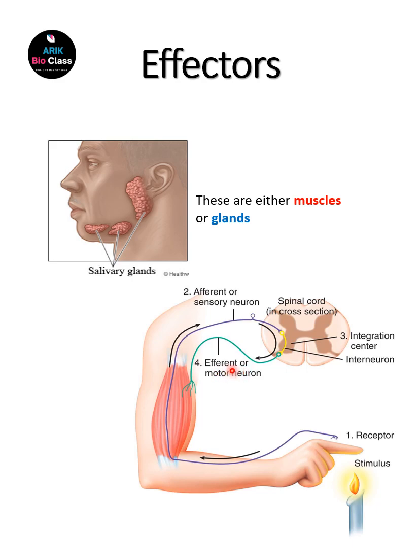So, effectors bring the information back to the effector organs. It is a very simple example of how the stimulus is taken by the receptor, information is traveled to the coordinator with the help of sensory nerves, and this comes back to the muscles or the effectors through the motor neurons.